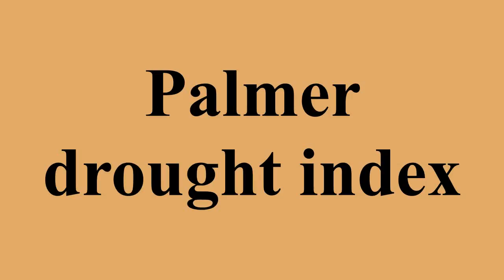The Palmer Drought Index is based on a supply and demand model of soil moisture. Supply is comparatively straightforward to calculate, but demand is more complicated as it depends on many factors — not just temperature and the amount of moisture in the soil, but also hard-to-calibrate factors including evapotranspiration and recharge rates. Palmer tried to overcome such difficulties by developing an algorithm that approximated them based on the most readily available data: precipitation and temperature.